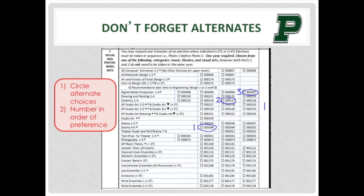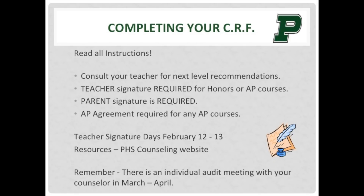Please be aware that elective and off-roll preferences cannot be guaranteed. The system programs academic courses as the first priority when scheduling you into classes. Completing your CRF correctly is very important to make sure that you create the best schedule possible. This means you must read and follow directions carefully. Building a solid schedule is a team process that requires collaboration with your teachers and parents. If you are planning on taking AP or Honors classes, you need a teacher recommendation to ensure that you are prepared and will be successful in those courses.